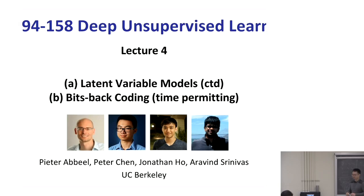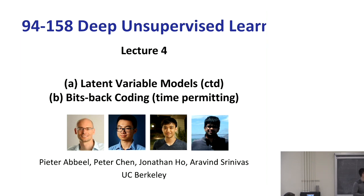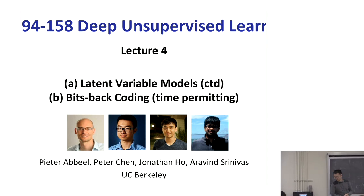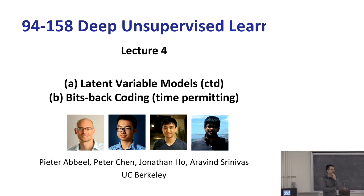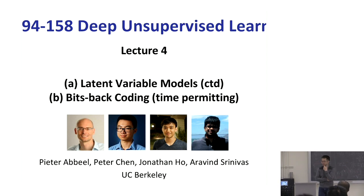Welcome back to lecture four of deep unsupervised learning. This week we will take a look at some of the remaining topics of latent variable models, as well as some other applications of variational inference. Then we will talk about bits-back coding, which is another interpretation of variational inference, but also a way to turn variational inference into an actual compression algorithm, just like arithmetic encoding with autoregressive models.